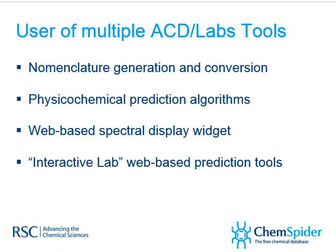The tools that we use from ACD Labs include Nomenclature Generation and Conversion, where we take chemicals and create systematic names, and where we take chemical names, synonyms, identifiers, and systematic names and convert them back to chemical structures. That's for our text mining projects. We also predict properties for chemicals using the tools. We have a web-based spectral display widget that I will show you where we use it a little later. And we also integrate the Interactive Lab, or iLab, web-based prediction tools, which also includes a database lookup.